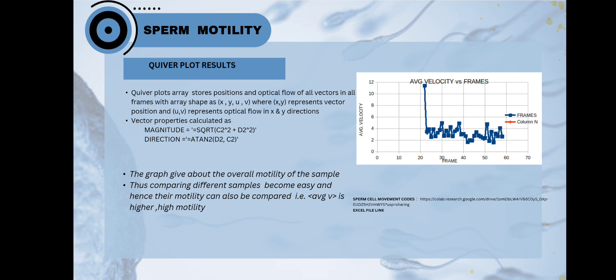Here, we can determine the average velocity for each frame which shows us the overall motility of each frame. From the overall velocity of each frame, we can compare different samples and determine their motility. So, the sample with higher velocity will have higher motility and definitely results in more fertility chances.